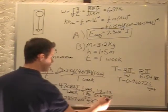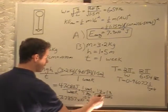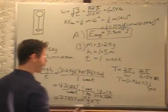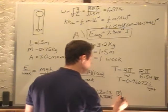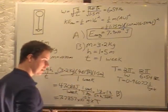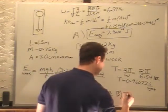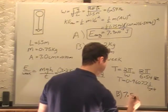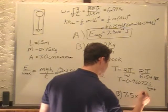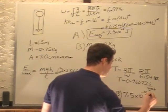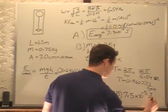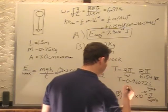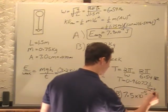So plug this into here, and our seconds will cancel. We'll get joules per cycle. So our answer for B, if I multiply that times that, is 7.5 times 10 to the minus 5 joules per cycle. And that is the final answer.